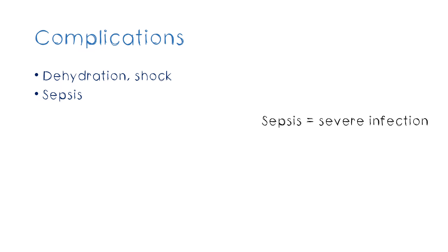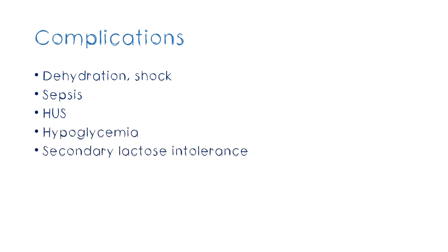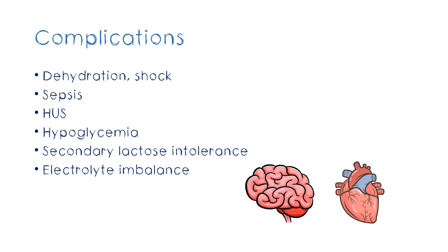There is another condition called hemolytic uremic syndrome, where in some cases of diarrhea with certain organisms, your red cells may break down rapidly, causing hemolysis, and your kidneys can be affected. So you can ask if the baby's eyes began to turn yellowish due to accumulated bilirubin, or if the baby's urine output reduced. Then there can be secondary lactose intolerance and electrolyte imbalance. Electrolyte imbalances can be deadly and affect the brain, heart, and other organs. So you can ask if the patient had any palpitations or other features. In a small child, obviously you can't ask that, and you can gain an idea through investigations.